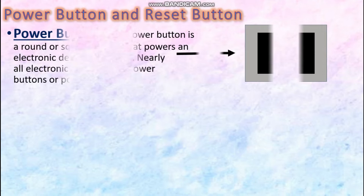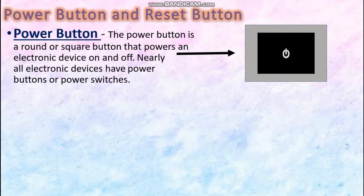A Power Button is a round or a square button that helps to power an electronic device. It is found on all the electronic devices such as your television set, your mixer grinder, and so on. Unless you use the power button, electronic devices will not function.